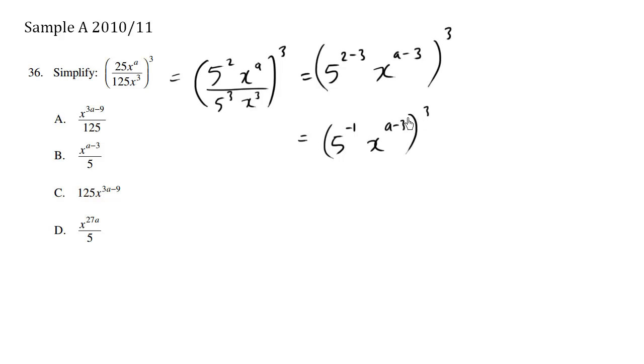This is where we can actually spread this exponent love. So this essentially becomes 5 to the negative 1 to the 3, x to the a minus 3 to the 3. So I'm spreading out that exponent. And we have exponent bracket exponent, which means that we multiply. So negative 1 times 3 becomes 5 to the negative 3.